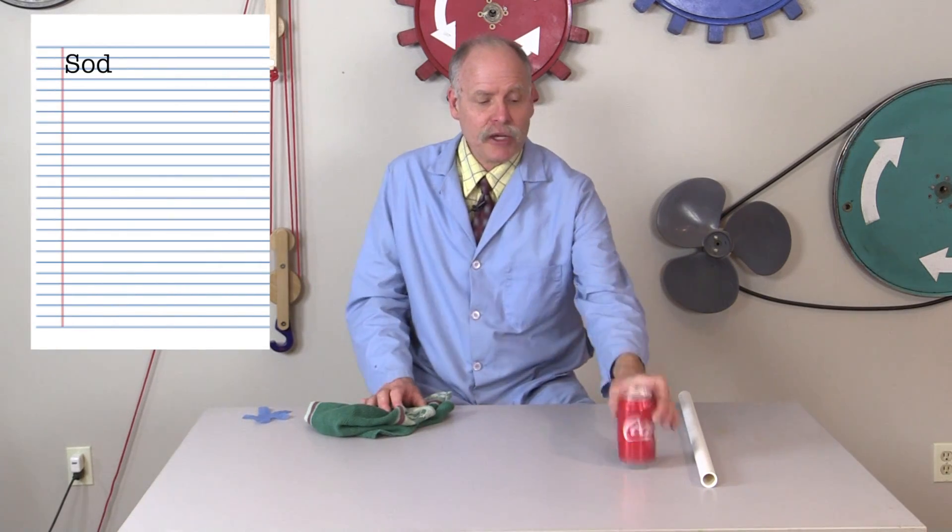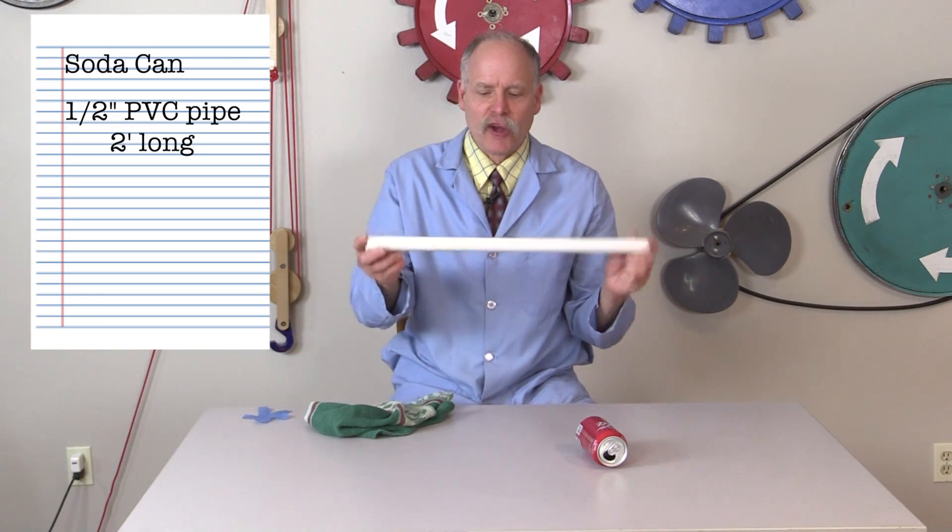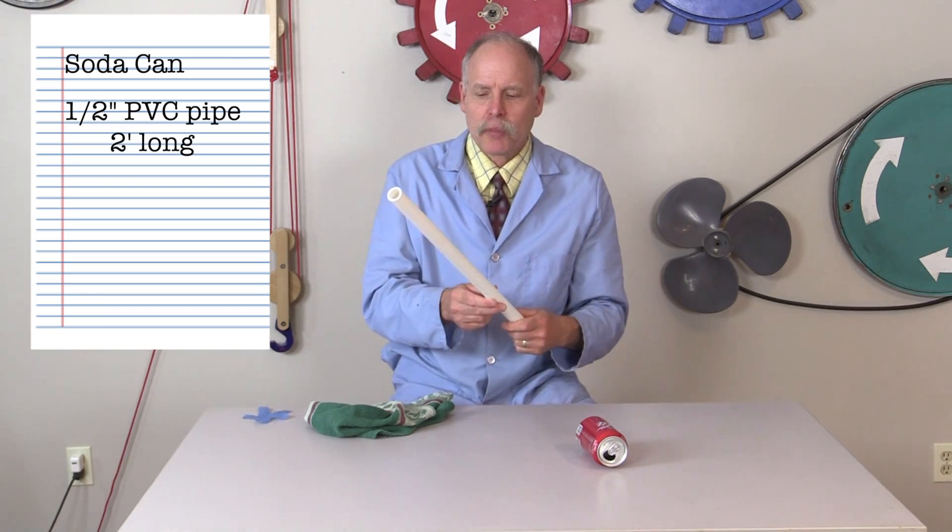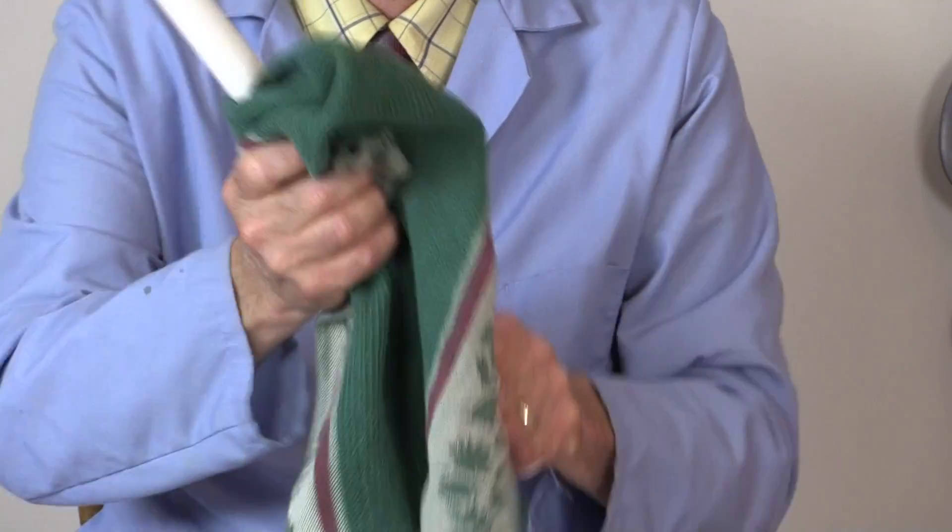So now let's do some activities with electrostatic force. These are some of my favorites. For this you're going to need a soda can, a piece of PVC pipe - you can get this at Home Depot or Lowe's, any of those places, they're already cut - and a rag. So what we're going to do is charge up the PVC pipe with the rag.